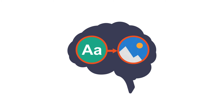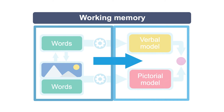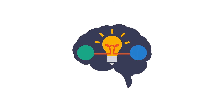Then there's essential processing, which refers to the cognitive work that's necessary in order to convert relevant information into verbal and pictorial mental models. Essential processing gets you from here to here.